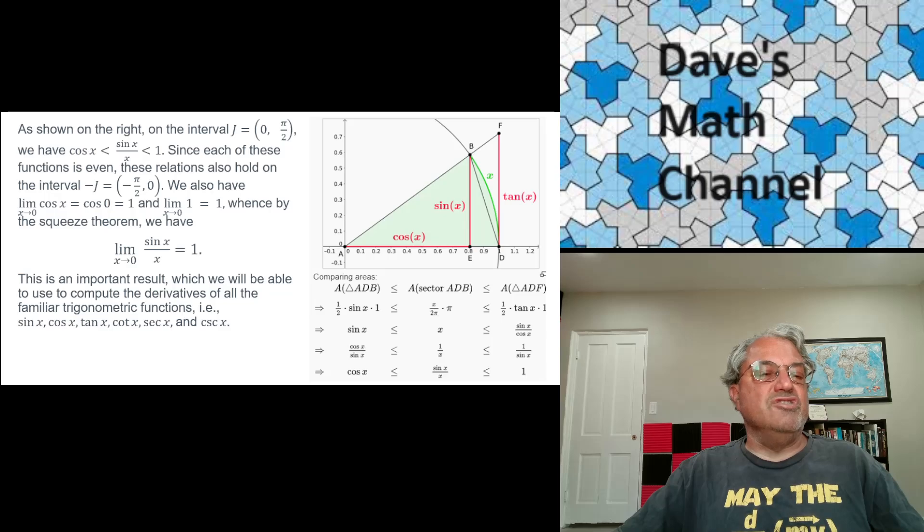And now we really want to use this squeeze theorem for a particular problem. So now let's first look at the graph on the right. So we want to prove, ultimately we want to prove this limit. The limit as x approaches 0 of sine x over x is equal to 1. This is the limit that will allow us to compute the derivatives of all the trig functions. So this is a very important limit. So how do we prove this? Well, we use the squeeze theorem to prove it. So again, we have three functions here. f of x is what we're calling sine x over x. And you can see it's not really defined when x is 0. You can't divide by 0. So technically this function sine x over x is undefined when x equals 0. That's why I want to compute its limit.